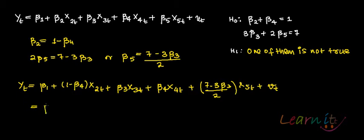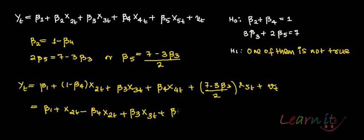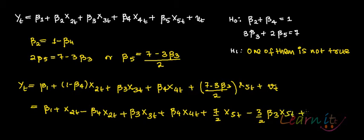Let us simplify this. What we get is: beta 1 plus x2t minus beta 4 x2t plus beta 3 x3t plus beta 4 x4t plus 7 by 2 x5t minus 3 by 2 beta 3 x5t plus vt.